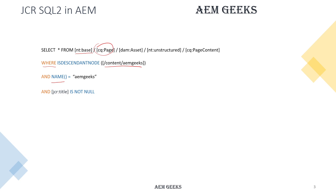Now let's say you want to check if some properties are available. For example, if you need pages from the AEM Geeks site whose jcr:title is NOT NULL, it will give you the results of pages whose title is not null. You can also search for pages with a particular title — for example, pages which have a title of 'AEM Geeks'.